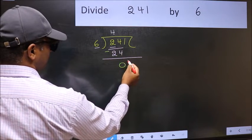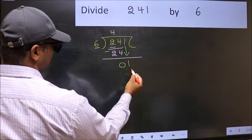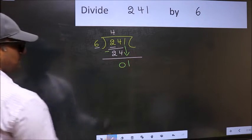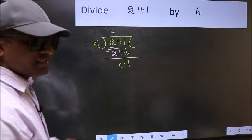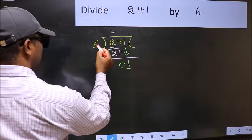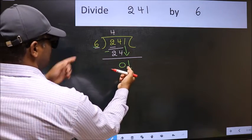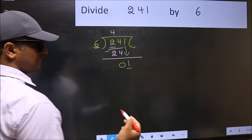0. After this, bring down the beside number, so 1 down. After this step, the mistake happens. And the mistake is this: here we have 1 and here 6. 1 is smaller than 6, so what many do is they directly put dot and take 0, which is wrong.